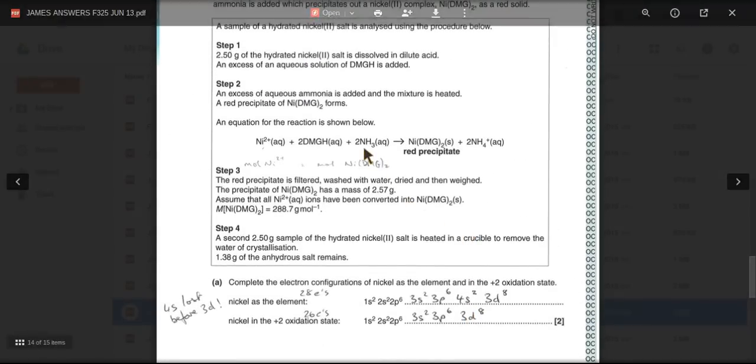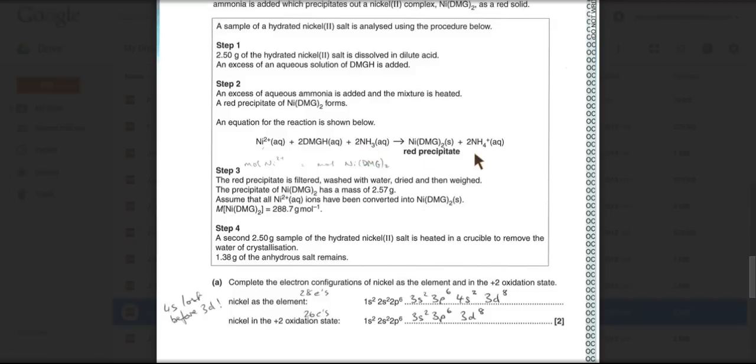Look at the ammonia. Look at what happened to it. It's gained a proton or accepted a proton. So it's acting as a base. And where's it getting that proton from? There it is there on the DMGH.